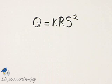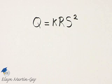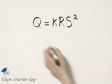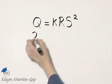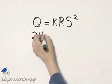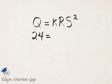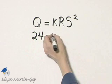Now let's use the information given to find the value of our constant K. If Q is 24 when R is 3 and S is 4,